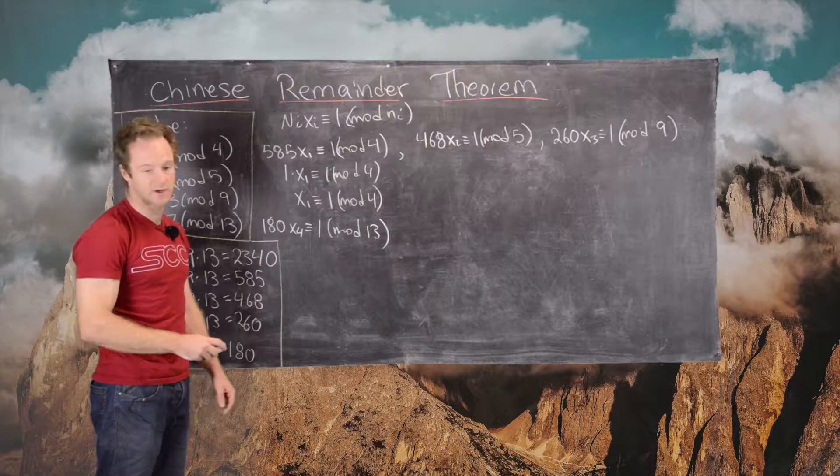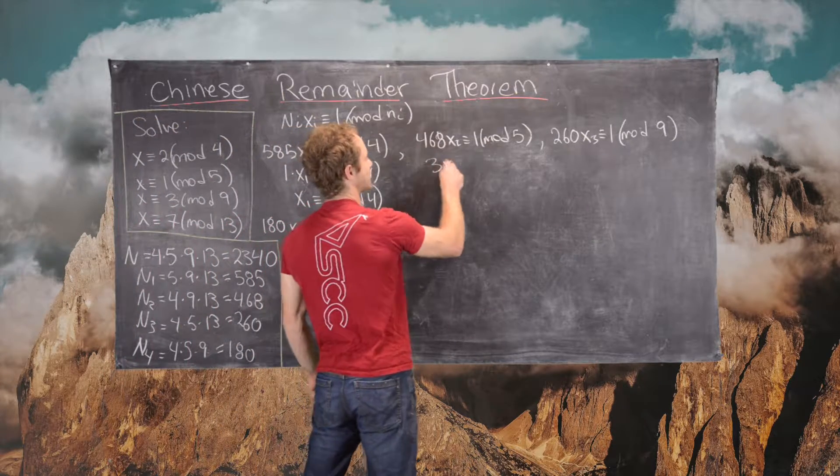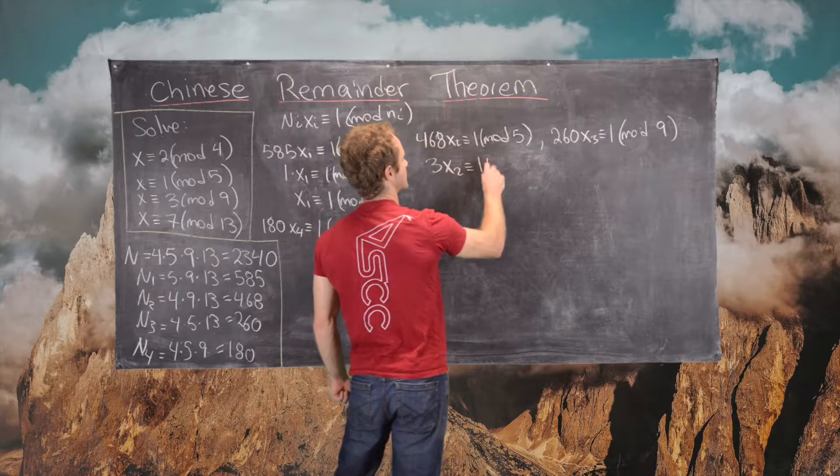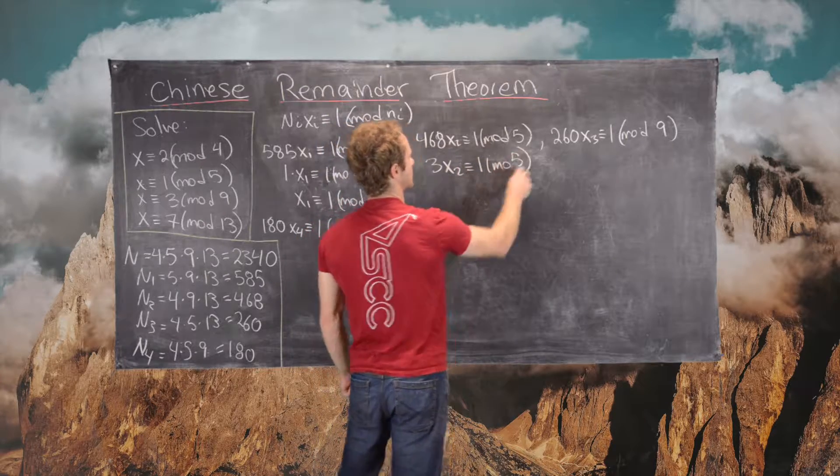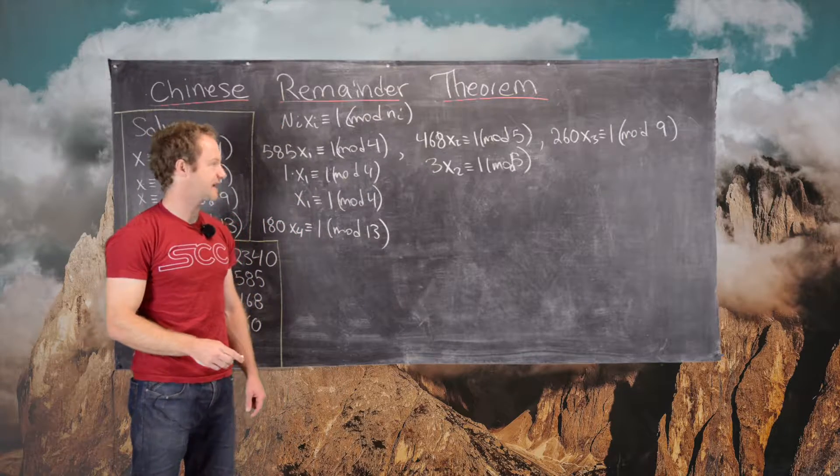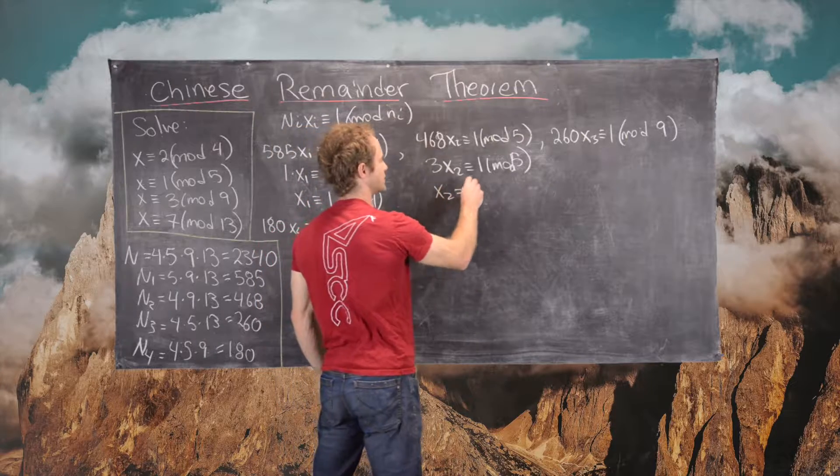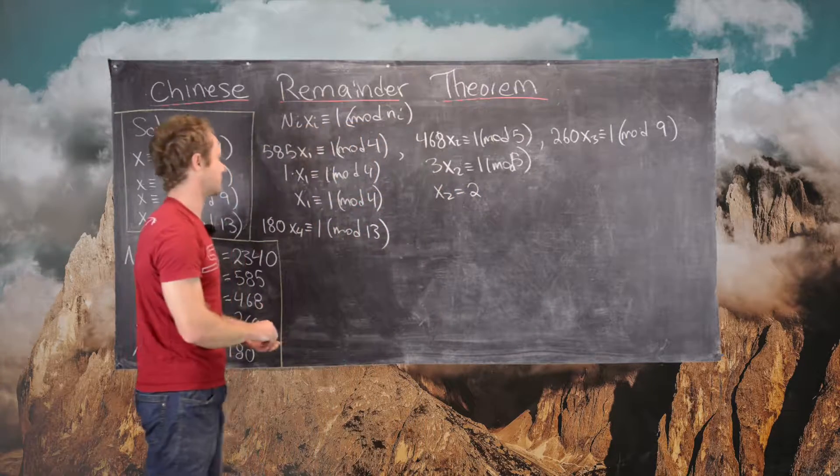Let's go to the next one. 468 is the same thing as 3 mod 5. We notice that 3 times 2 equals 6, which is 1 mod 5. So we can take X2 equal to 2.